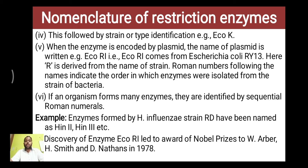The discovery of enzyme ECO-R1 first led to the award of the Nobel Prize to W.R. Arber, H. Smith, and D. Nathans in 1978.